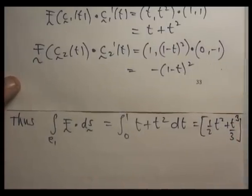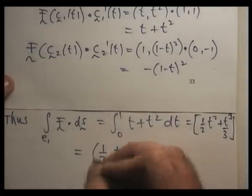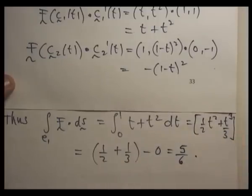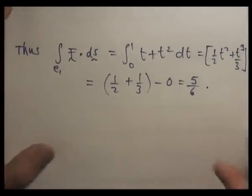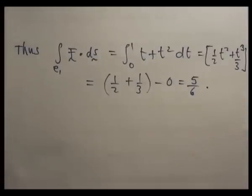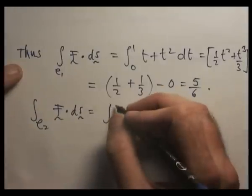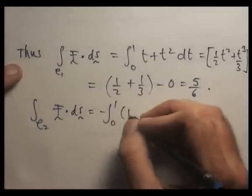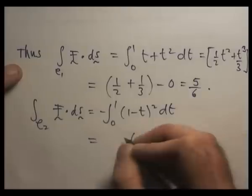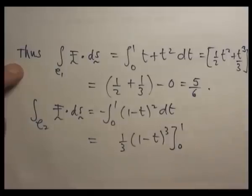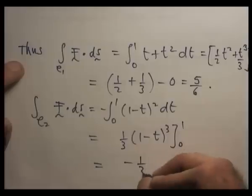That's evaluated from 0 to 1. What about the other integral? The integral from 0 to 1 of -(1-t)² dt. That's going to give us minus 1 third.